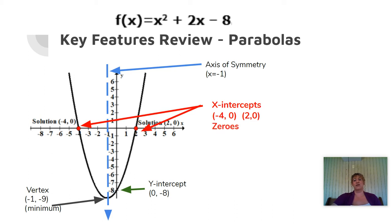X-intercepts have other names. Because y equals 0, we call them the zeros. Or we can call them the solutions or the roots. So our x-intercepts can be called any one of those three: zeros, solutions, and roots. The reason we call them zeros, solutions, and roots is because that's what we're looking for when we talk about solving a quadratic equation.